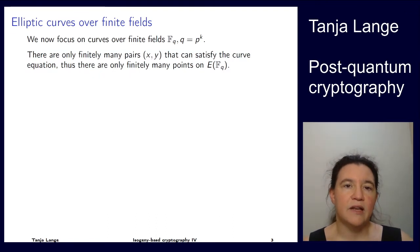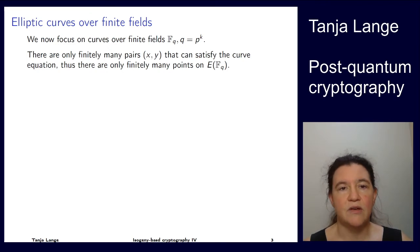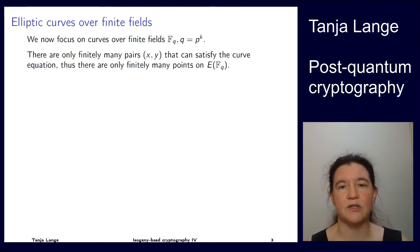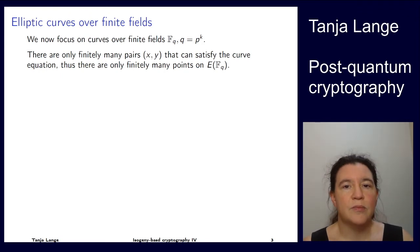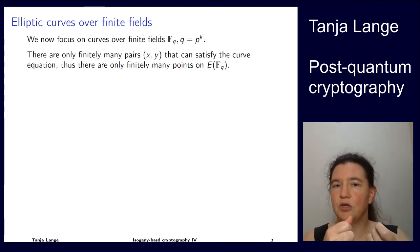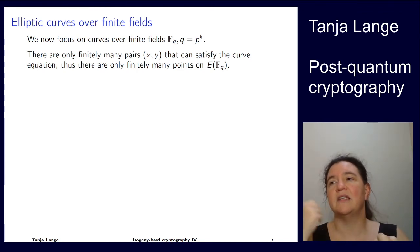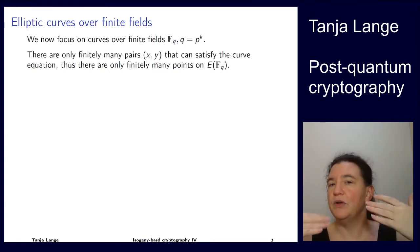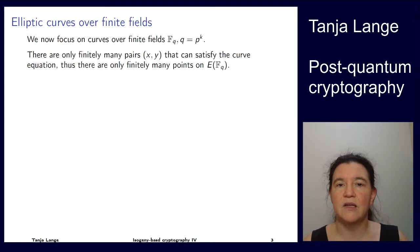We're going to look at finite fields in this course because we want to do cryptography — we want to deal with finite objects. We'll look at finite fields F_q where q is a power of a prime p. This means there are only finitely many pairs x and y. Looking at the short Weierstrass form y² = x³ + ax + b, for each x you plug in there exist at most two y's, namely plus y and minus y. So even looking at all q² pairs, that's still finitely many. Don't forget the point at infinity.